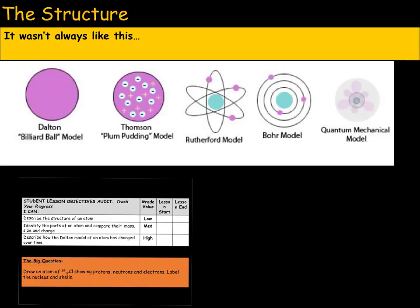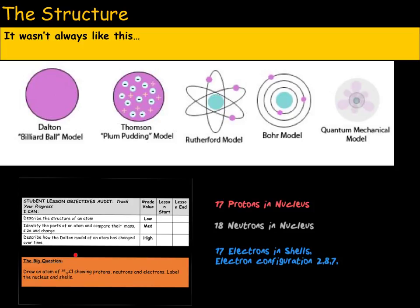For your diagram, you should have 17 protons. This comes from the atomic number of 17. As this is an atom of chlorine, it will also have 17 electrons. We will look at electron configuration in the next video in this series. However, the electron configuration for chlorine 35 would be 2,8,7. Finally, we have our neutrons. To calculate our number of neutrons, we need to take our atomic number of 17 away from our atomic mass of 35. This gives us 18 neutrons found in the nucleus.